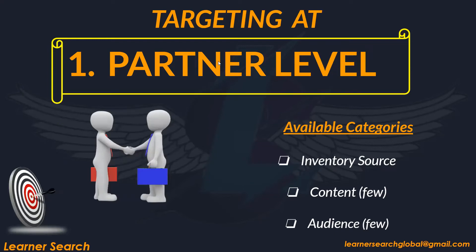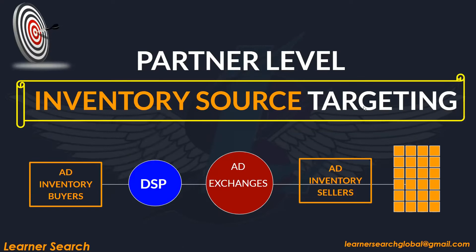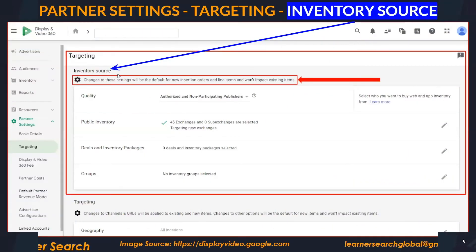Let's focus on Partner Level Targeting. The available categories are Inventory Source, Content with a few options, and Audience with a few. In this slide, you can see Inventory Source Targeting available at Partner Level. At Partner Level, go to Targeting under Partner Settings. When you click on this, you can see Inventory Source Targeting.